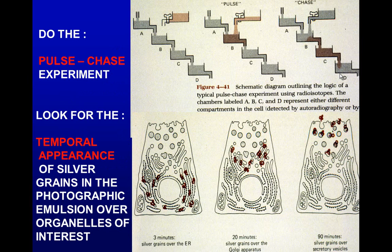The pulse-chase experiment follows the temporal appearance of different things throughout the cell. A pulse of radioactive material is given, followed by a chase of non-radioactive material, so you can follow the radioactivity through the cell as it proceeds. At three minutes it's in the rough endoplasmic reticulum, 20 minutes in the Golgi apparatus, and 60 minutes in secretory granules and the secretion itself.